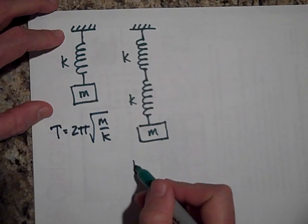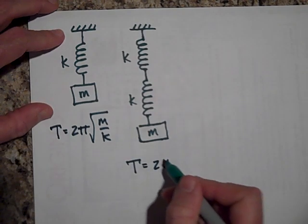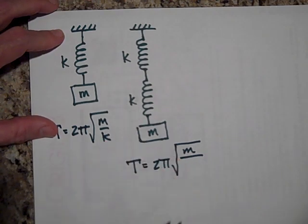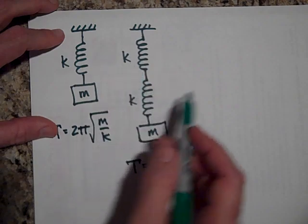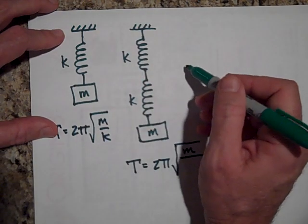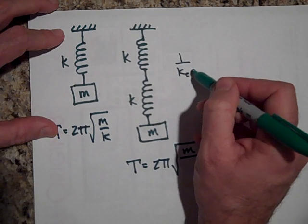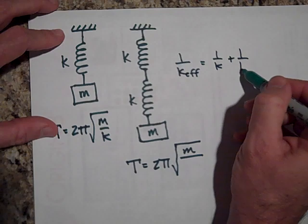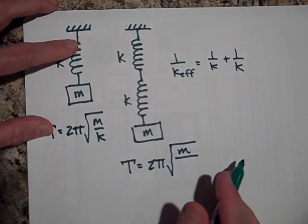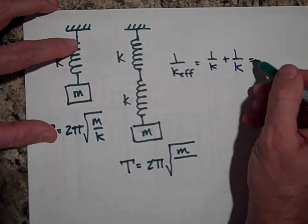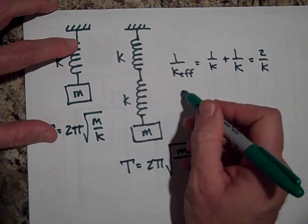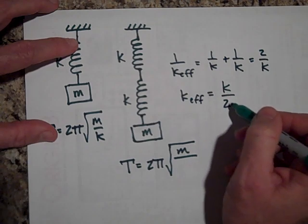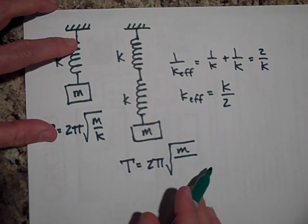Now, this one is going to be two pi times the square root of M. Now, what should I put for K? Well, K, since these are in series, I have to do the one over K effective is equal to one over K plus one over K. And so that's two over K. So K effective is K over two. If you flip both sides, if you take the reciprocal of both sides...